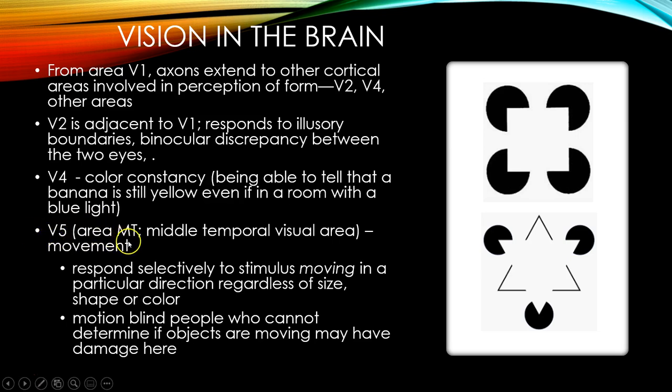V5, also called area MT, is most responsible for movement. It responds selectively to stimuli moving in a particular direction, regardless of size, shape, or color. If someone has damage to area V5, they can have motion blindness — the inability to see movement. That's an amazing and very life-changing disorder. People with motion blindness describe looking at cars on a street: instead of seeing the movement of cars, they see what's like flash photography — one picture of the car is here, and the next moment the car has jumped 10 feet, and then another 10 or 20 feet.